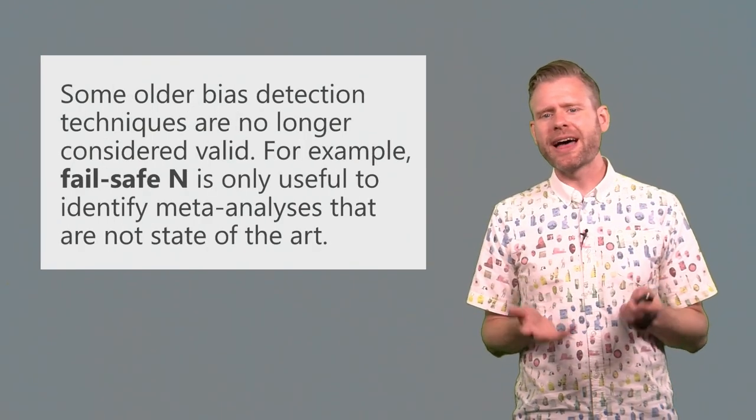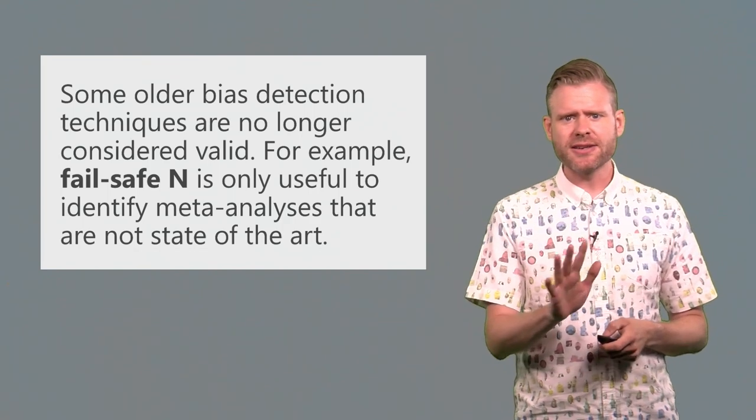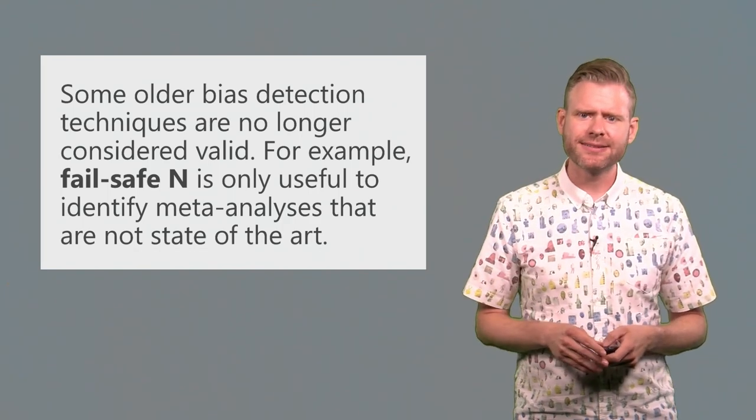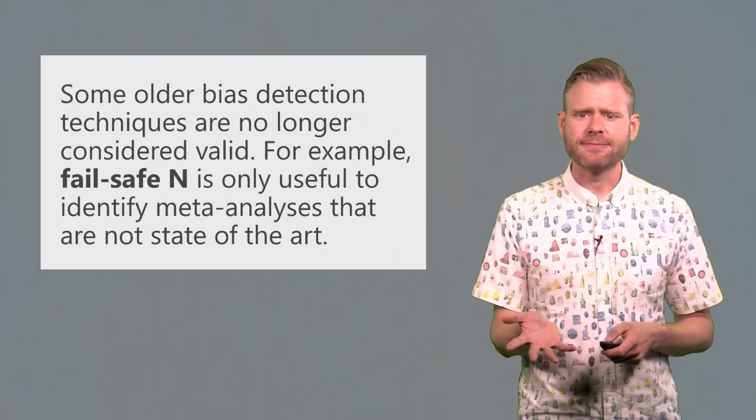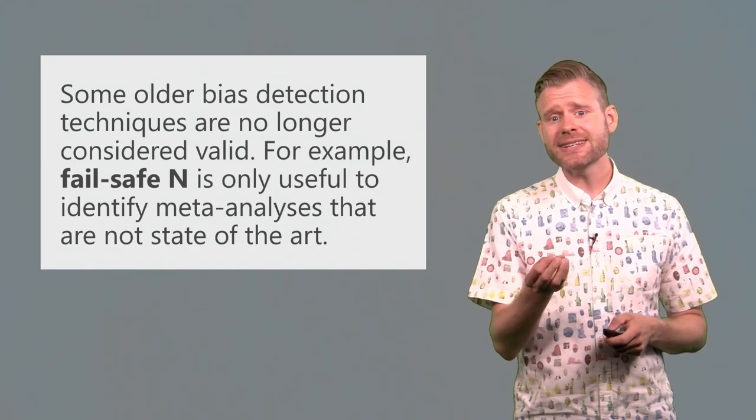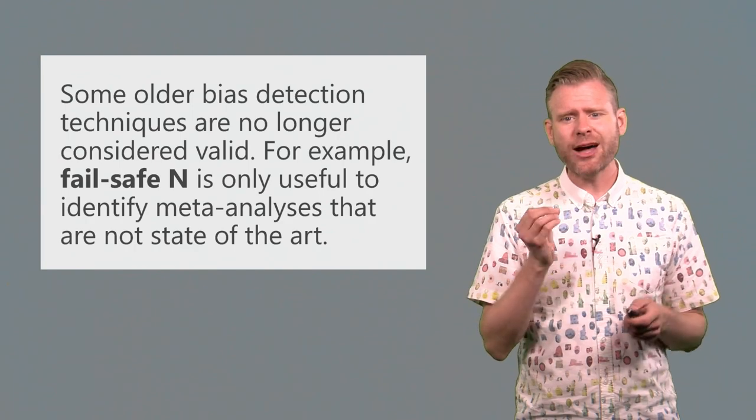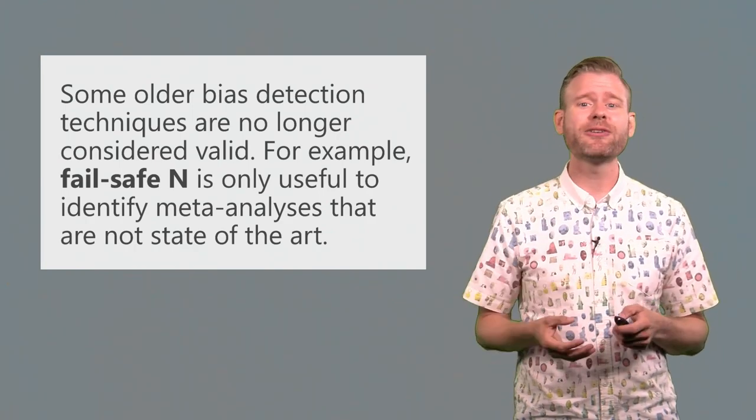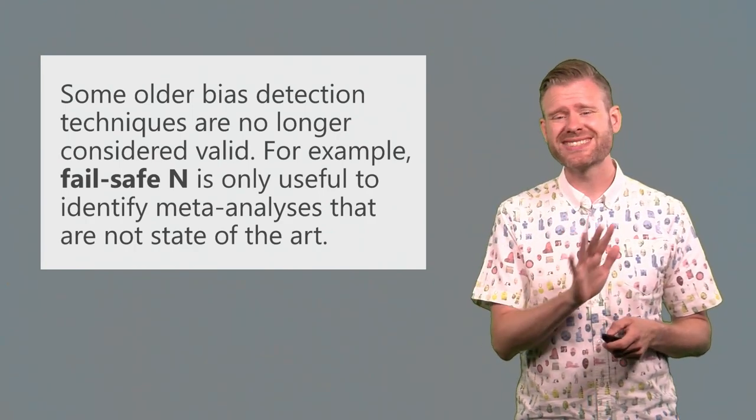Let's nevertheless take a look at some of these detection techniques. Now there are some older bias detection techniques that I won't discuss that are no longer considered valid. One of these is fail-safe N, and some reviewers or editors still insist that people use it, but really nowadays it's only useful to identify meta-analyses that are just not state-of-the-art.